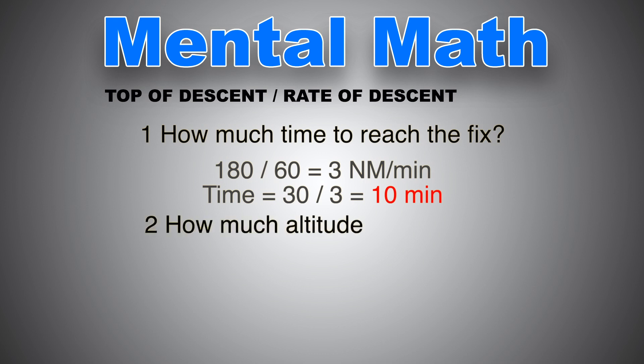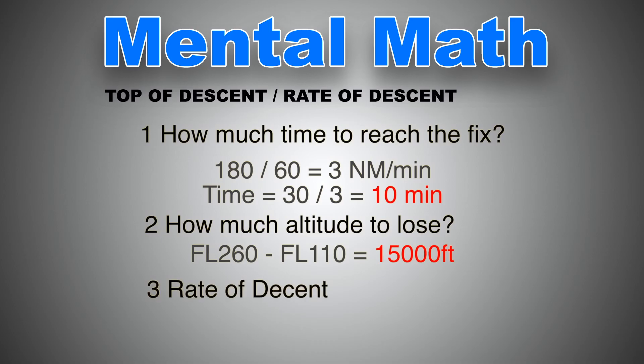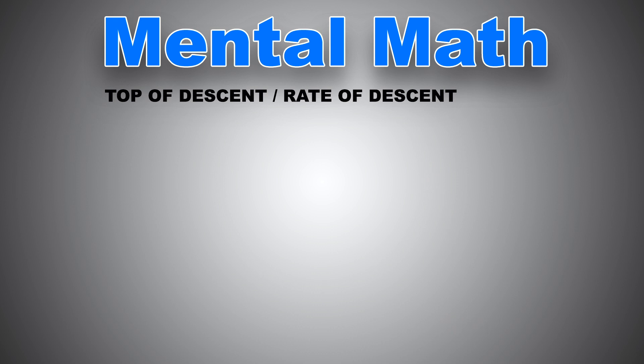Now step number two, how much altitude should we lose? Between flight level 260 and until we descend to flight level 110, we're going to need to lose 15,000 feet. Now last step is the rate of descent. Rate of descent is the altitude we need to lose in feet divided by the speed in minutes. So 15,000 feet, we divide it by 10 minutes and we get a rate of descent of 1,500 feet per minute.